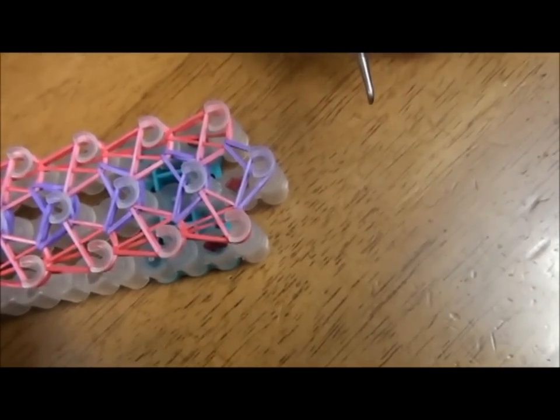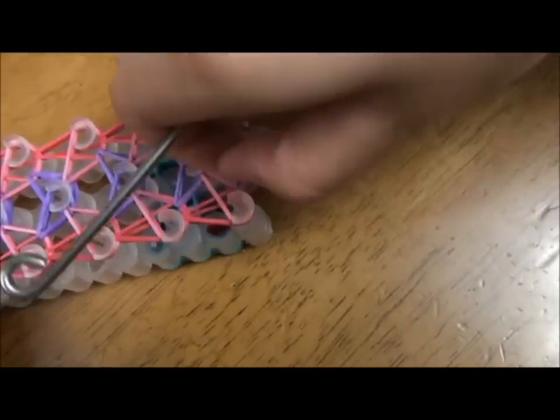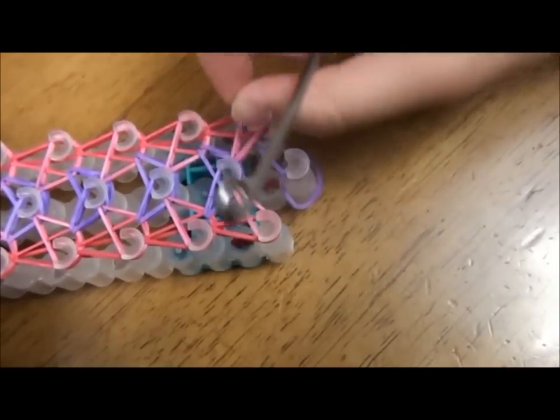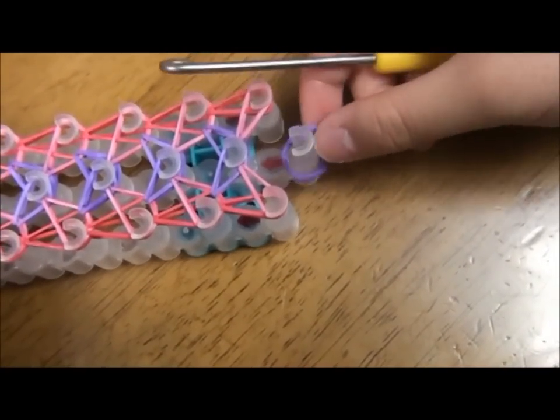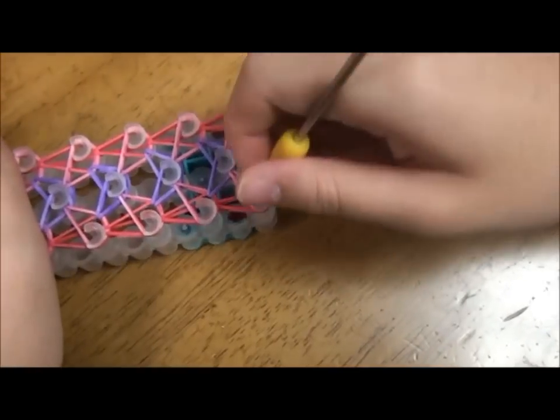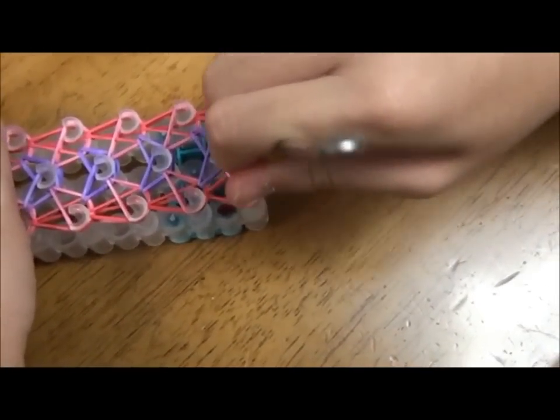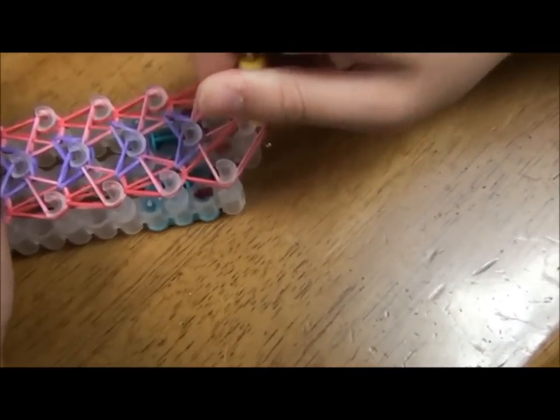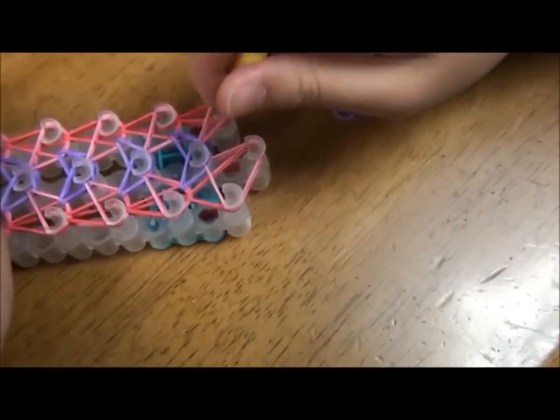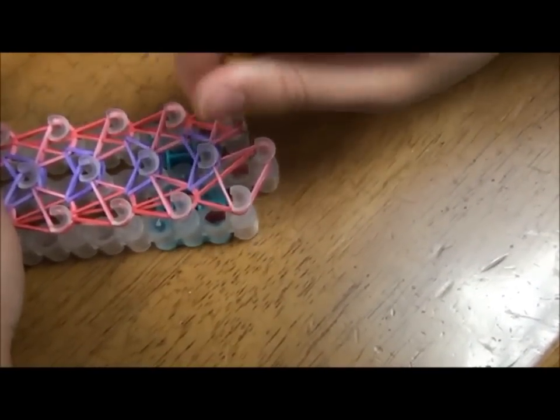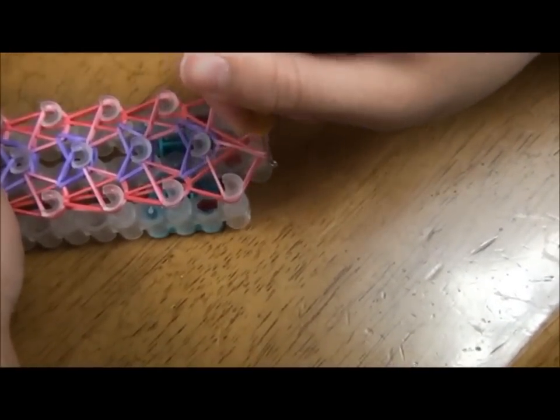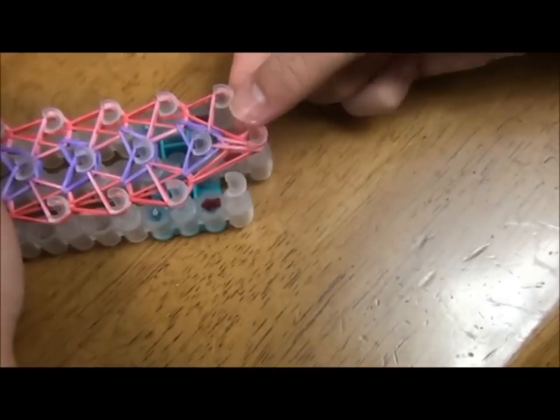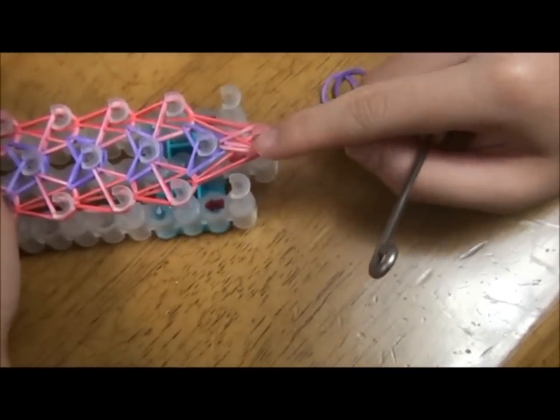Remove the last two rubber bands on this pin. Like so. Now we're going to put these rubber bands onto that pin right here, and these rubber bands onto this pin. You can remove this part too, so it should look like this.